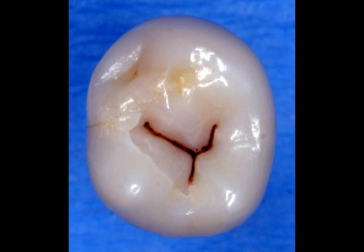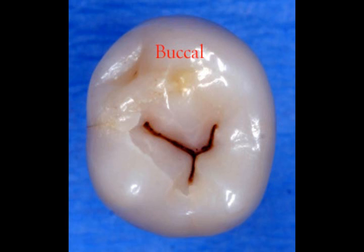Another finding that you'll see on mandibular posteriors is that the buccal cusp is much more worn. The tooth being shown is tooth number 29.